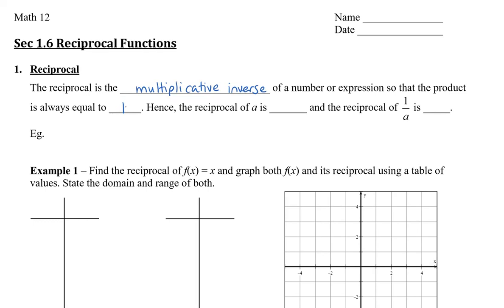The reciprocal of a would be 1 over a, and the reciprocal of 1 over a is then going to be a. Let's use a number to show this. If we have the number 7, the inverse is 1 over 7. When I multiply these two numbers together, I get 7 over 7, and that equals 1.